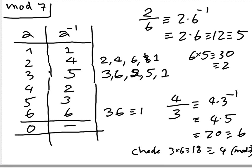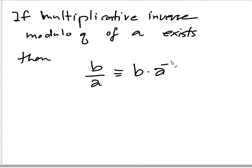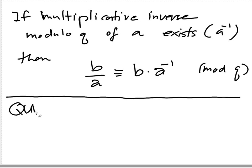So let's state what we know. If the multiplicative inverse modulo q of a exists, then b over a is gonna be equals to b times a inverse mod q, denoted by a to the minus 1. Now the question is, when does a inverse exist?